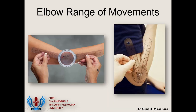We are now done with palpation of the elbow. I should also confess that there are many other tests for complex rotatory instability of the elbow, but I have consciously omitted them for undergraduate students as they are too confusing. I am trying to keep things as simple as possible.